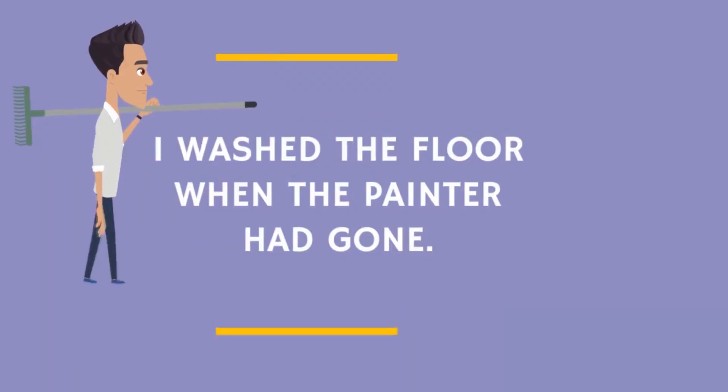So, there are two actions here: 'I washed the floor when the painter had gone.' If I use just the past simple for both actions, then you don't know which one happened before or after. All you know is that both actions are in the past. The past perfect is letting you know which action happened before the other. Which one came first? The painter had gone, and then I washed the floor.